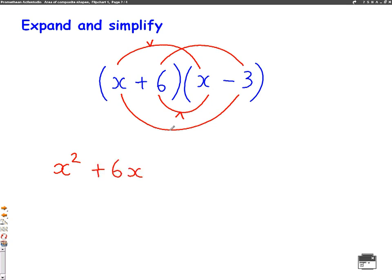Now we do the bottom one. This one goes from the x to the minus 3. So minus 3 times x will give us minus 3x. And then finally, back to the top one for our last one, 6 times minus 3. Well, 6 times 3 is 18, so 6 times minus 3 is minus 18.